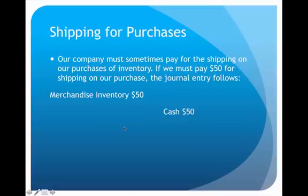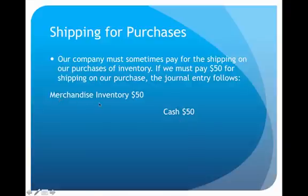In addition to that, sometimes I have to pay the shipping on my purchases, and if that's the case that would also require a journal entry. In this example we're going to pay $50 shipping on a purchase that we previously made. In this case I'm going to debit Merchandise Inventory and credit Cash. The reason I do that is because I want to increase the value of the inventory — that's another $50 I paid just to obtain that inventory, and I want that inventory account to reflect all the actual costs.